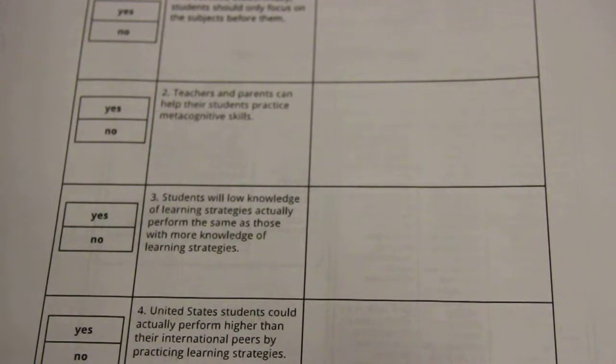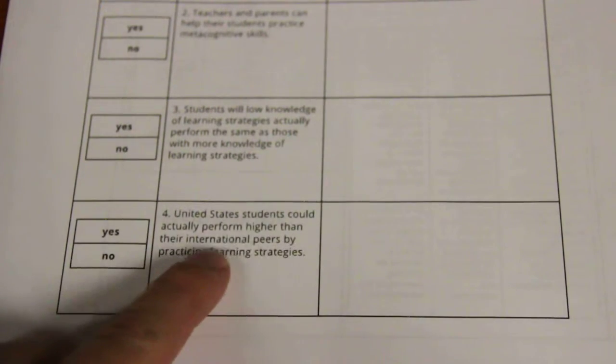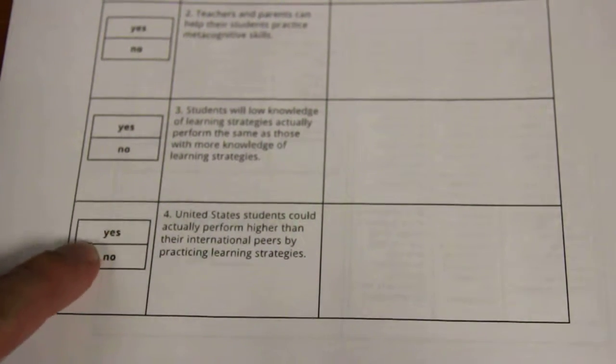But basically, first, I would just give a point if they correctly identify this. Does the text, because this is what this is about, does the text support or refute the statement? So for this statement, the United States students could actually perform higher than their international peers by practicing learning strategies. They get a point for identifying if this article agreed or disagreed with that statement.